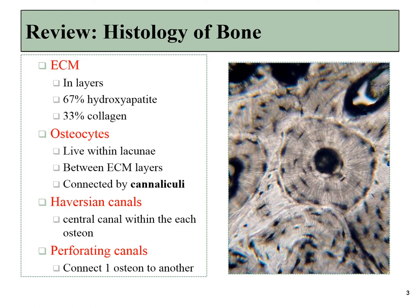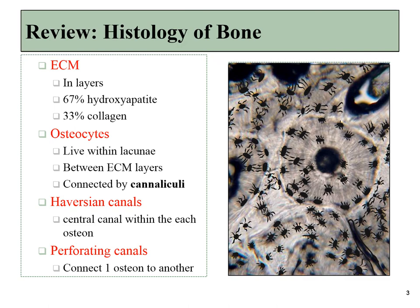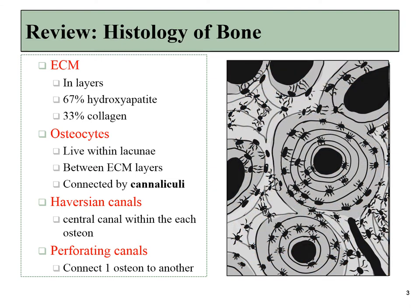Bone tissue is made by osteoblasts. These cells can be found in the mature tissue as osteocytes trapped between layers of extracellular matrix. At the center of each one of these osteons in compact bone is a Haversian canal, and this is where you would find blood vessels providing the cells with nutrients. This makes compact bone a highly vascular tissue.